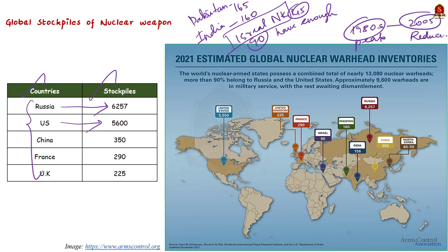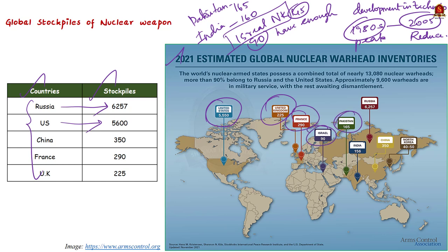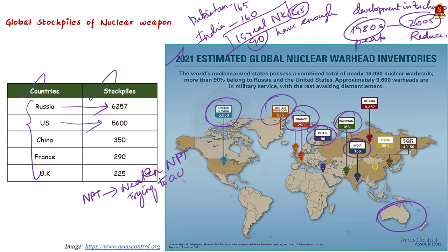Since 2005, most reduction has come from retirement of stockpiles. Development in technologies also means the world keeps seeing new ways to deploy nuclear weapons, which is another worrying trend. This shows that countries are trying to acquire nuclear weapons, not abandon them — Australia acquiring nuclear-powered submarines could reignite an arms race.